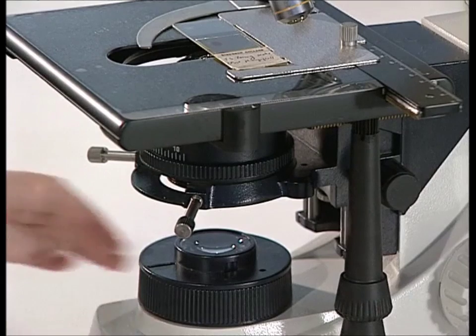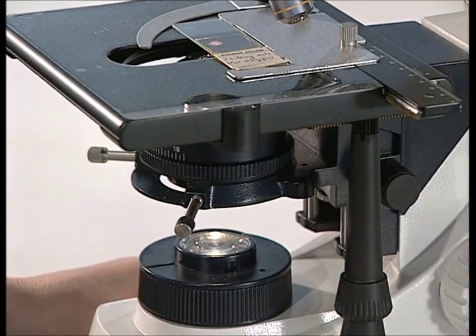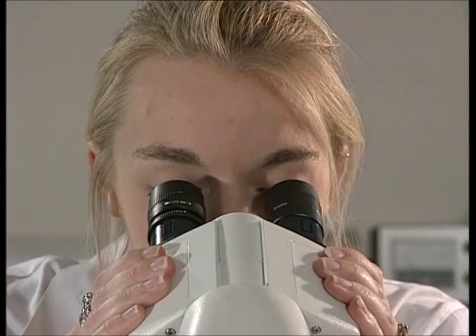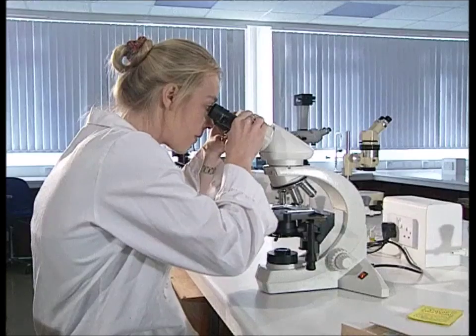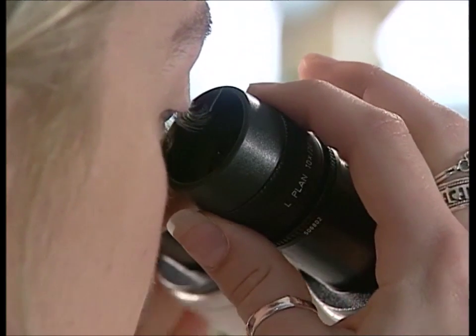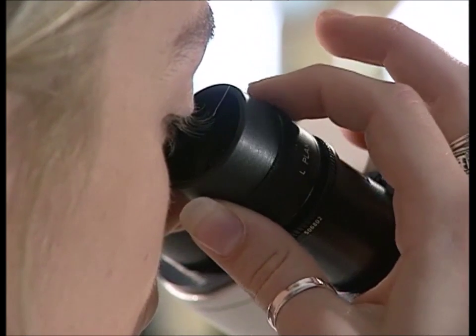Once the power has been switched on, the lamp intensity needs to be set at a comfortable viewing level. Adjust the spacing of the twin eyepieces for your own comfort. One of the eyepieces will have a focusing ring. Adjust it so that a sharp image can be seen with both eyes.